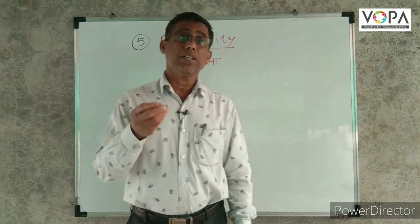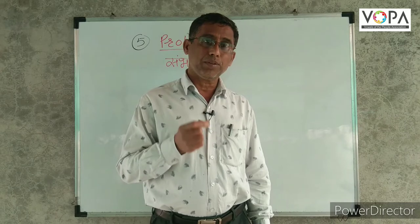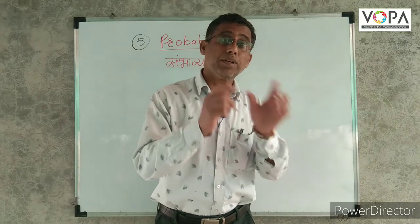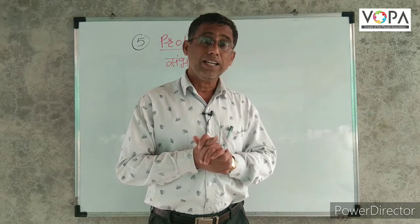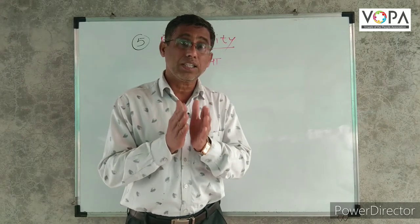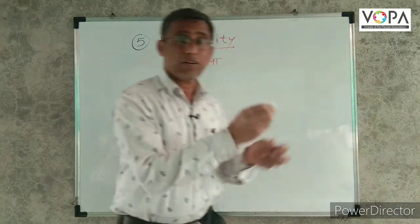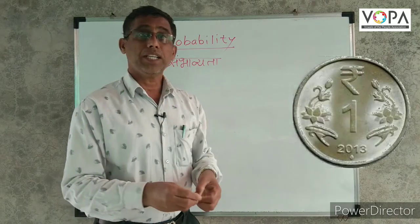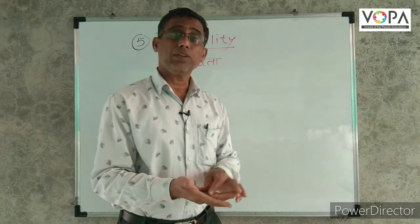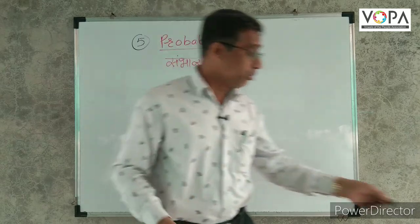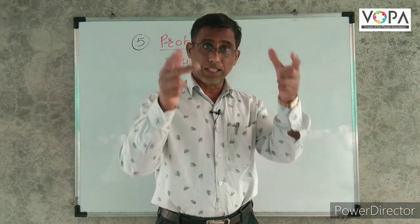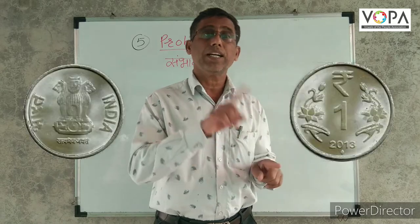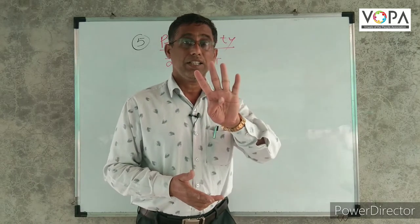Probability is something we encounter in day to day life. For example, in a coin toss, there is head and tail. If we toss a coin, there will be two possible outcomes. There will be four possibilities when tossing two coins.